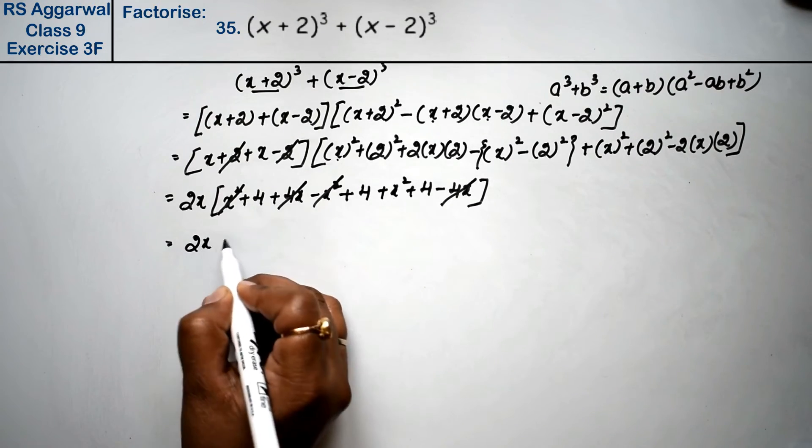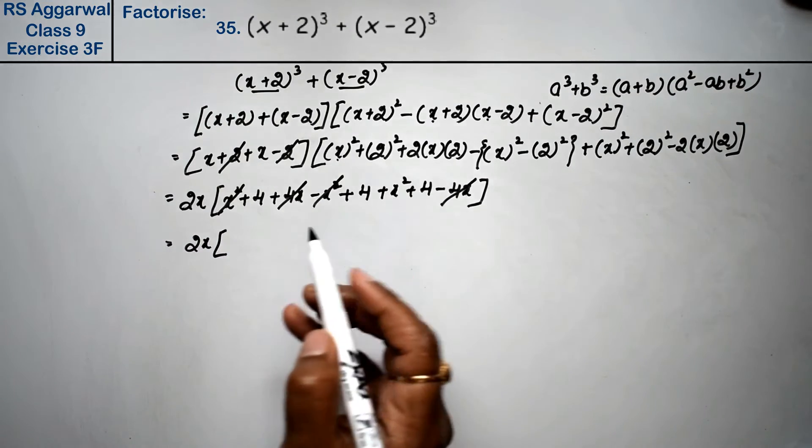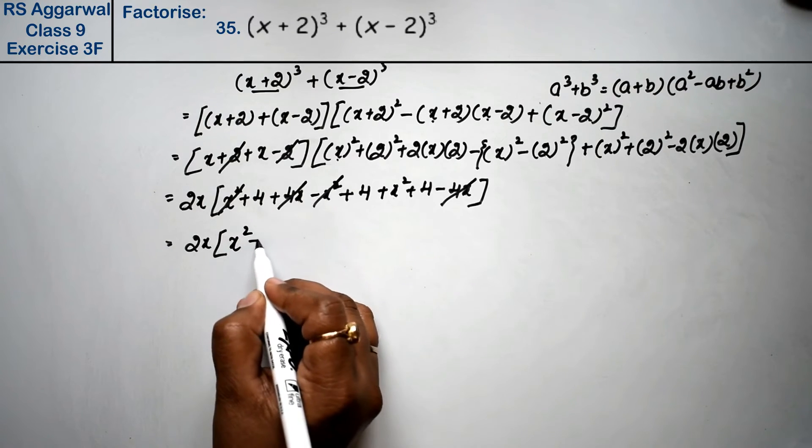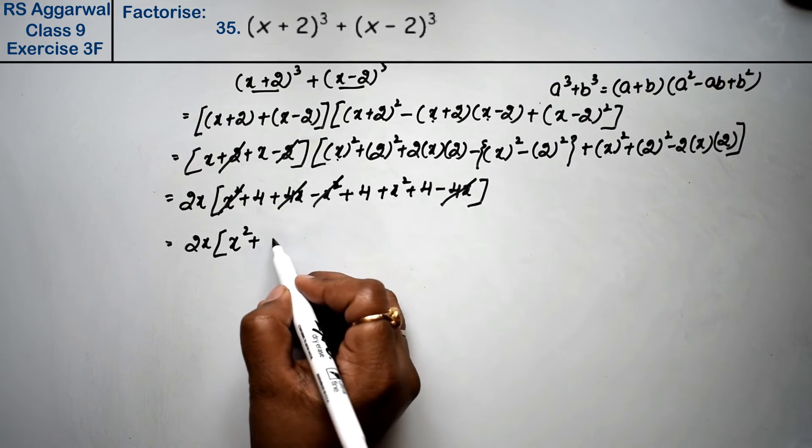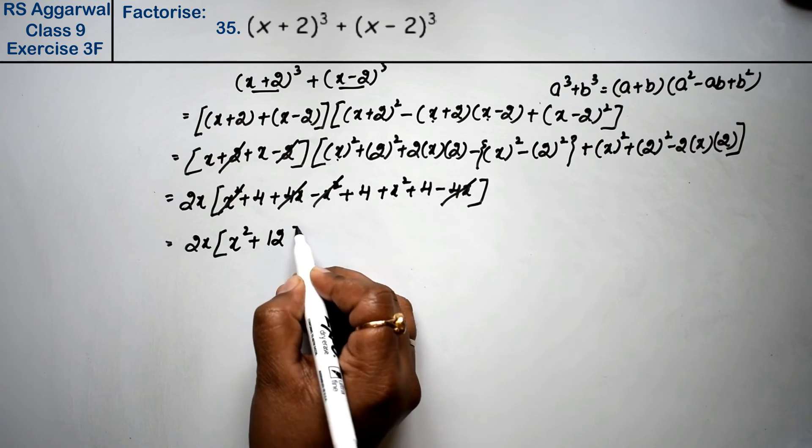So the answer is 2x times x² plus 4 plus 4 is 8, 8 plus 4 is 12. The answer is 2x(x² + 12).